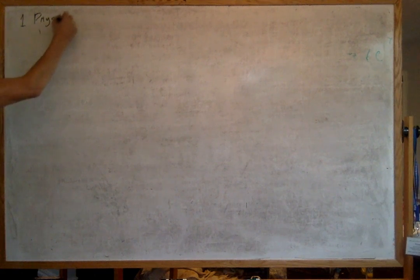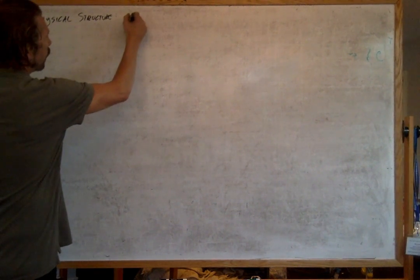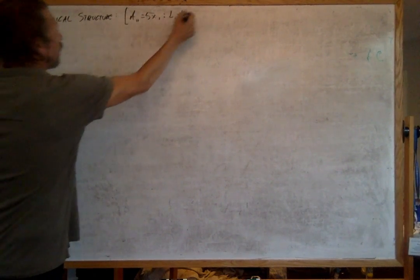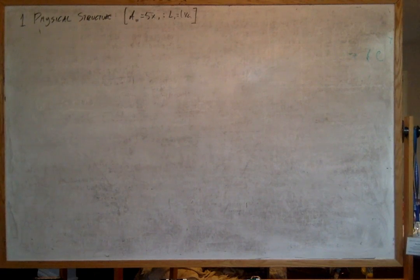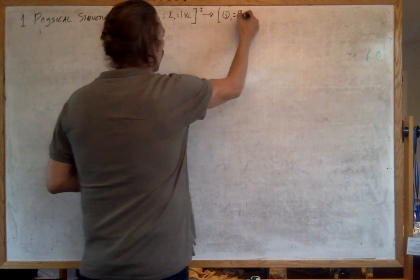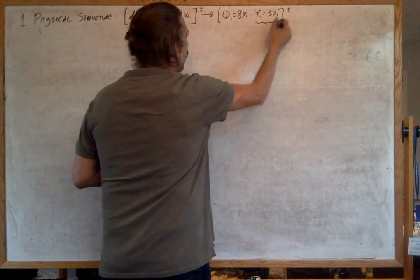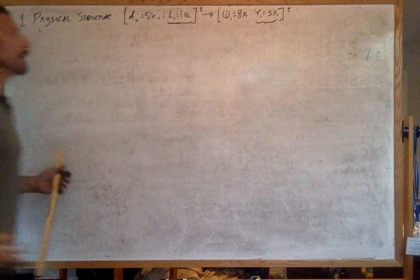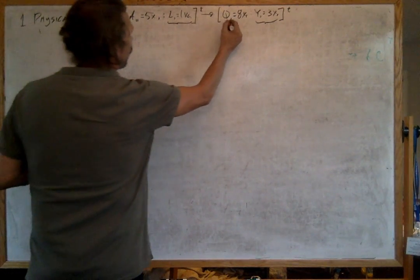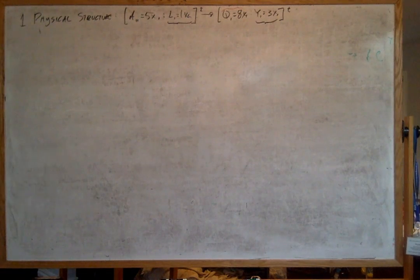With our physical structure of production, we saw that we're going to have A11, which is going to be equal to five-quarters of corn; L1, which is going to be equal to one hour of labor. The numbers are just used to illustrate — don't get lost in them, they're completely heuristic. That's going to produce a gross output of eight quarters of corn, and then we're going to have a net output of three quarters of corn.